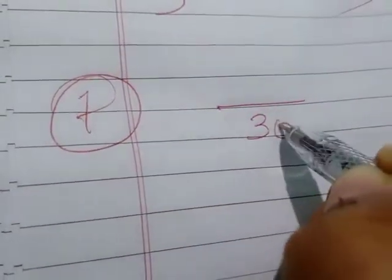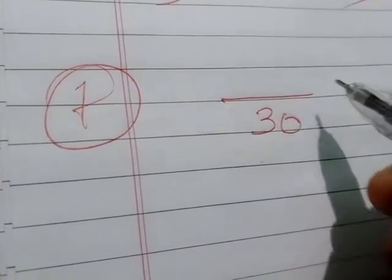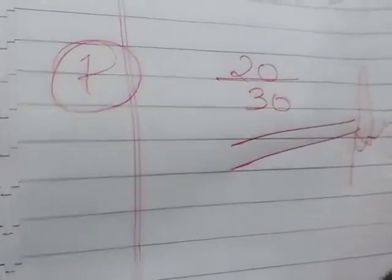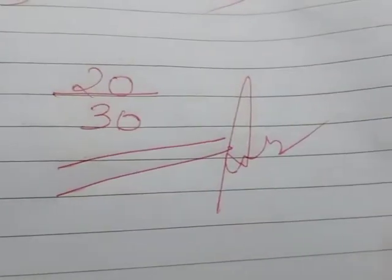The fraction, I mean the number of dresses she has to complete altogether, that is 30. Out of this 30 she has completed 20. Therefore 20 upon 30 is the fraction of dresses which she has completed.